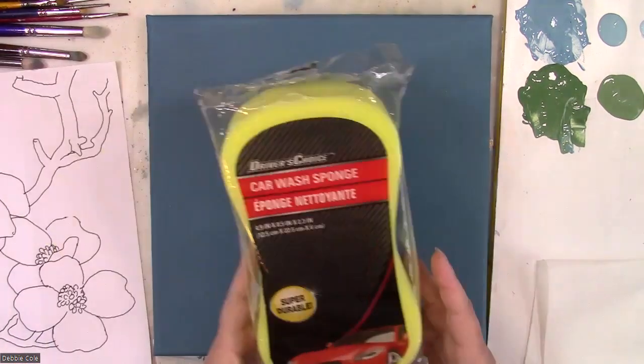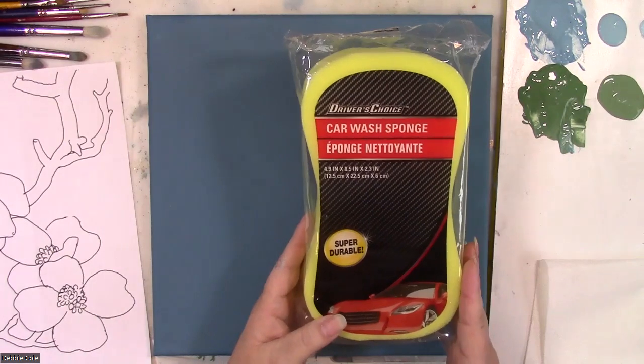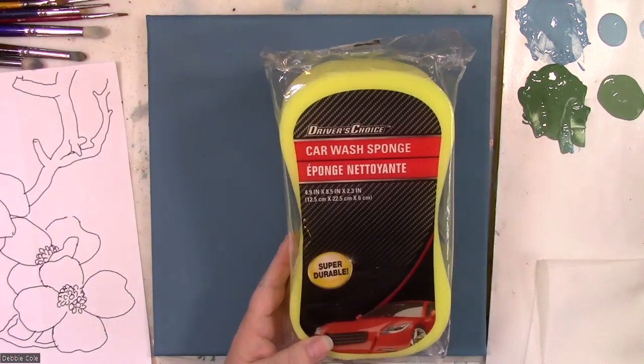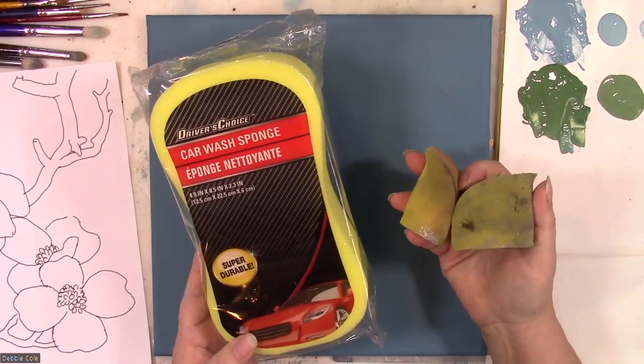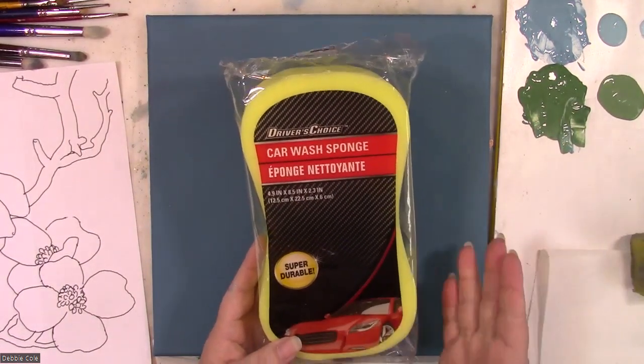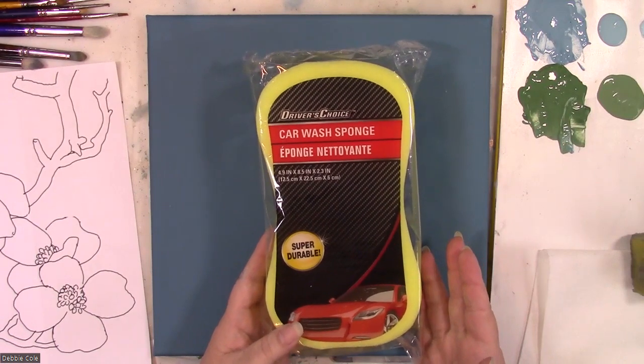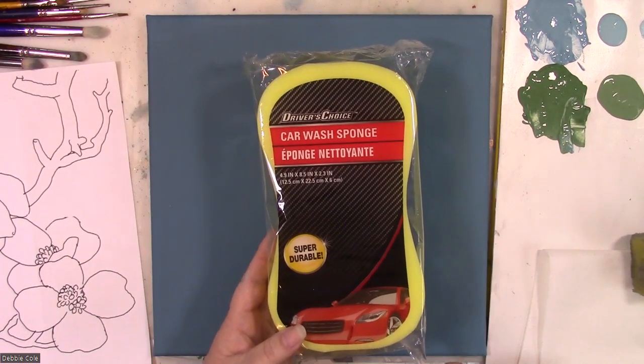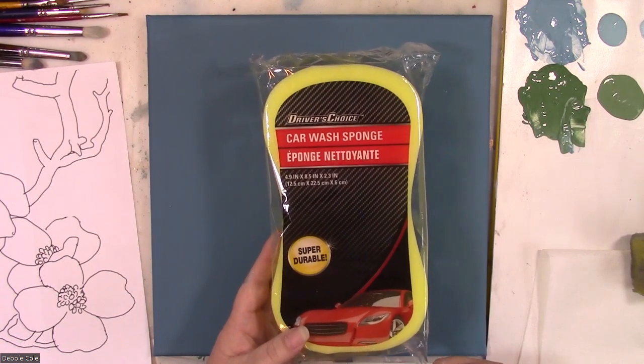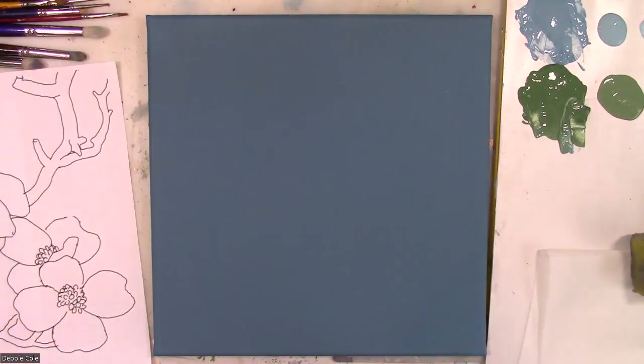And so I'm also going to be using some sponges that I've cut up and you can see these have been around the block a few times. These I get at Dollar Tree and I use them a lot for doing a variety of things. And so what we're going to be actually doing is dry brushing in some of the background. So let's get started.